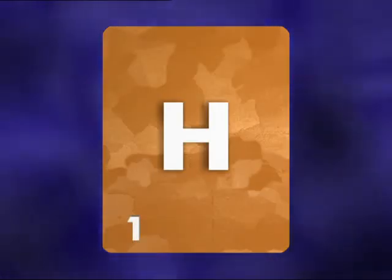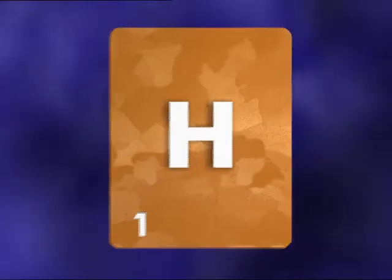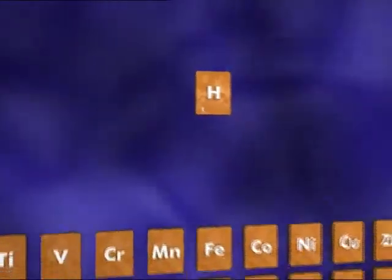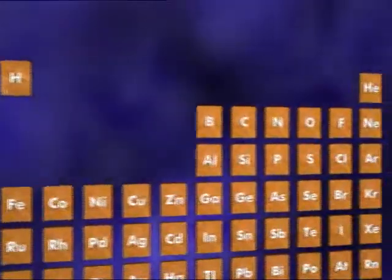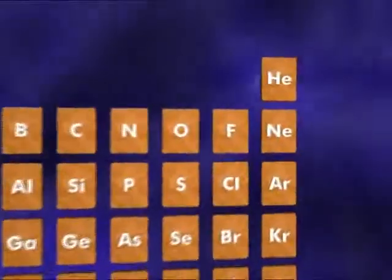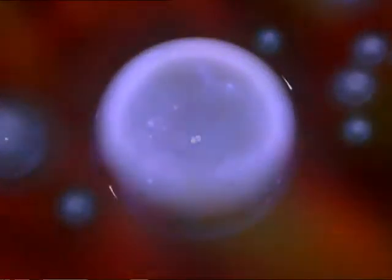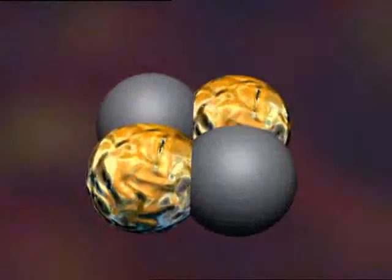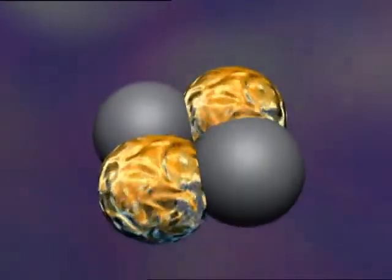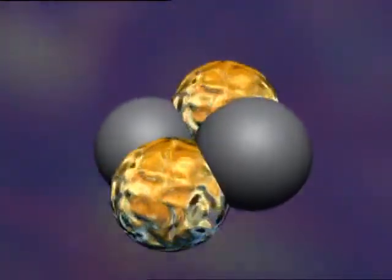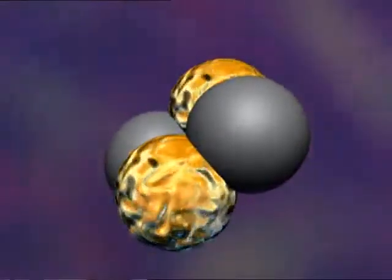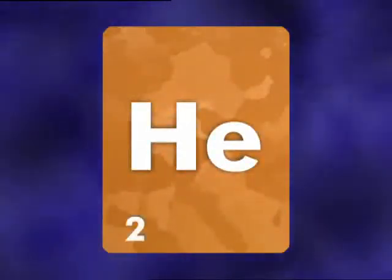Atomic number is usually written to the bottom left of the element symbol. So what about the next element in the table, helium? What's its atomic number? Helium has two electrons orbiting around the outside. In the nucleus, there are two protons and two neutrons. The atomic number is simply the number of protons, so the atomic number of helium is two.